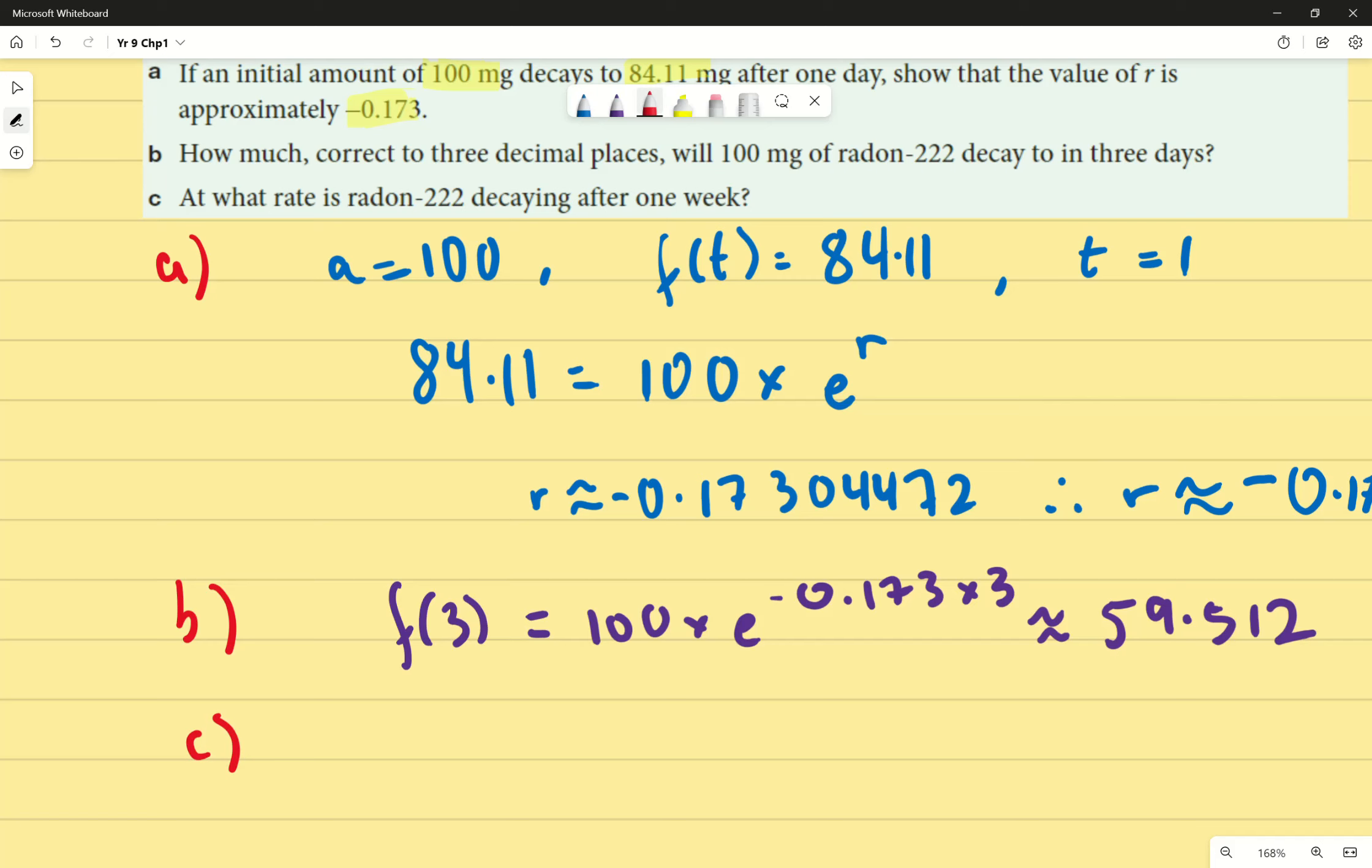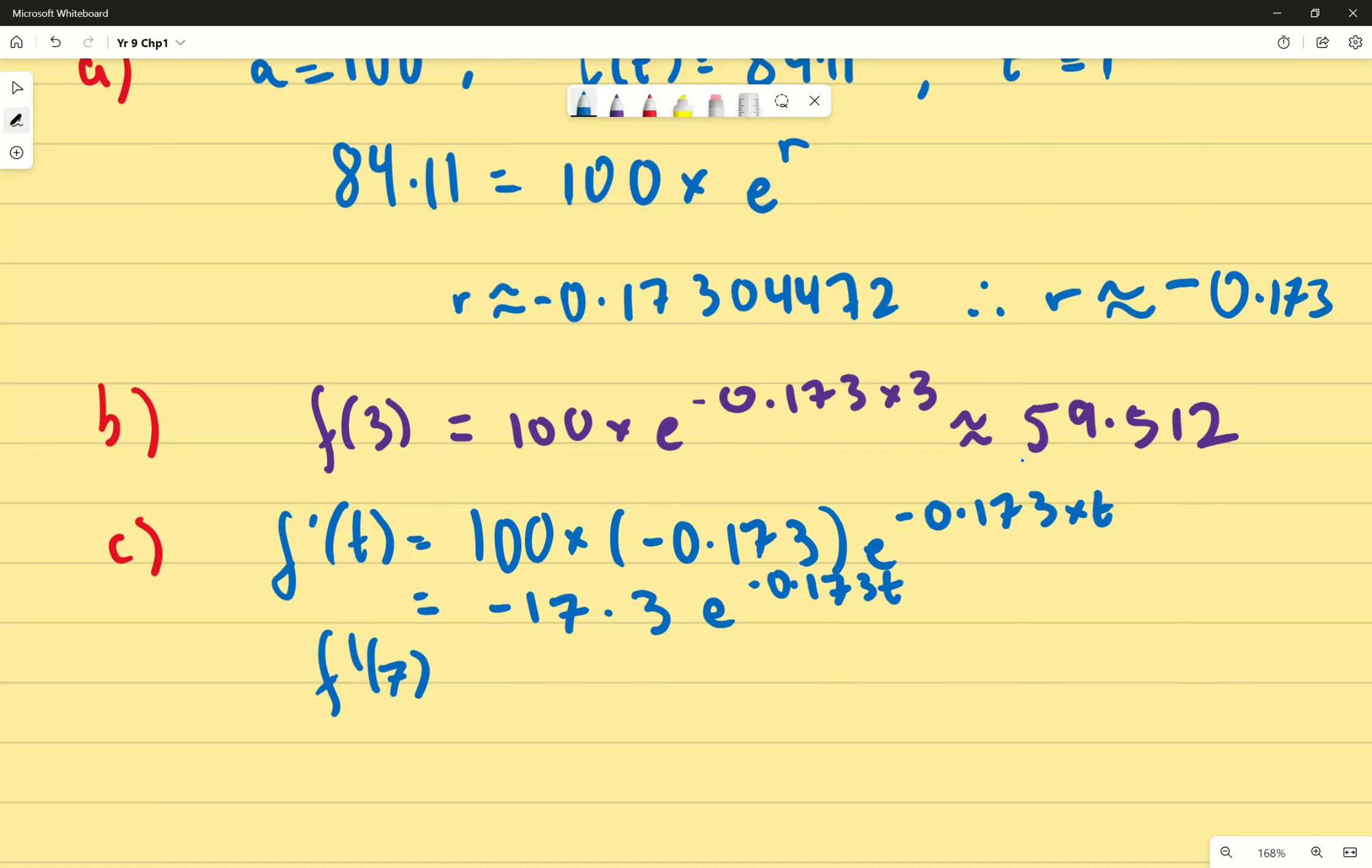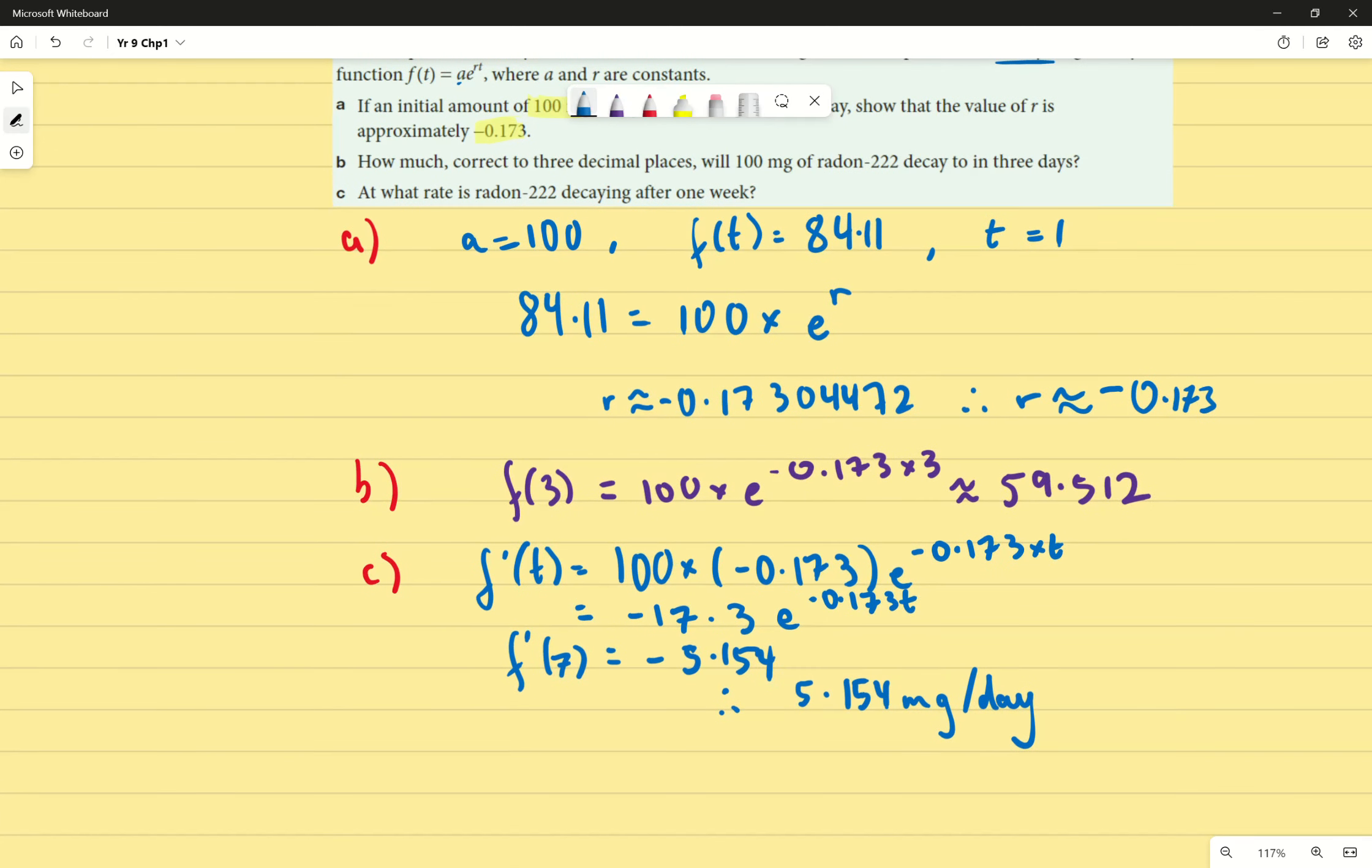Last question says at what rate is radon 222 decaying after one week? We're saying what rate, which means we're applying that it needs to be using the differentiated equation. So that's f dash of t, which is equivalent of 100 times by negative 0.173. So I'm just deriving the power and bringing it down to the front, e to the power of negative 0.173 times t, which then ends up being negative 17.3 times e to the power of negative 0.173t. Apologies for the awful handwriting. Once you've done that, we can rewrite the f dash of 7, which gives us an answer of negative 5.154, which means therefore, after one week, radon 222 is decaying at a rate of 5.154 milligrams per day. Please know that because the question doesn't specify a unit, you must provide it as milligrams per day.